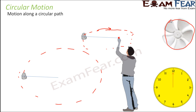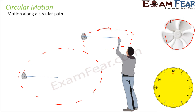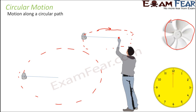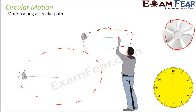You can see rectilinear motion and circular motion all around yourself — it is not necessary that you need to search your textbooks for examples. Just start observing things around you and you will find objects in circular motion, objects in rectilinear motion, and you will be able to relate science with objects surrounding you.